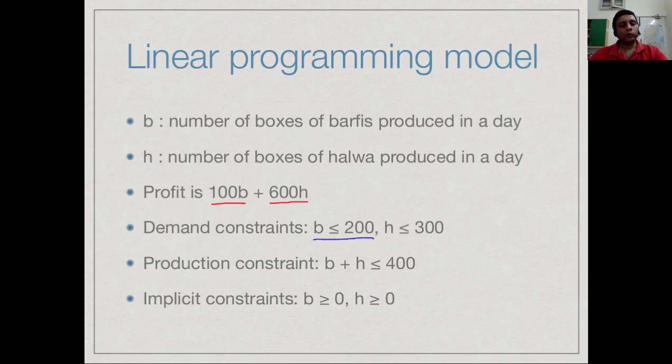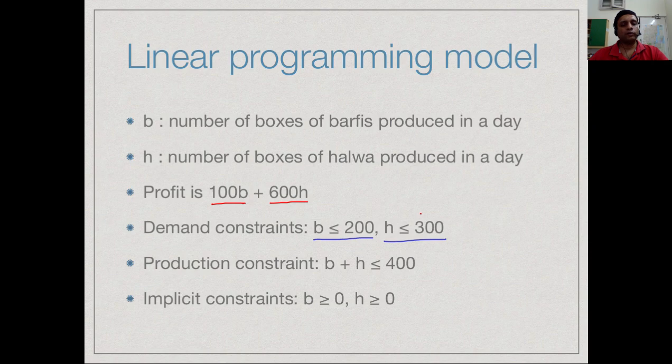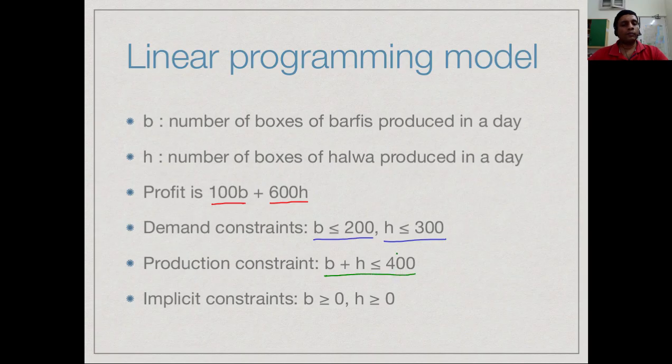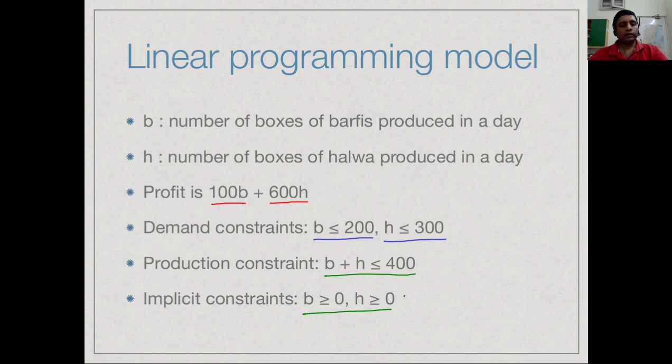We also have some information about how much we can sell. We cannot sell more than 200 boxes of barfis a day, so b must be less than or equal to 200. We cannot sell more than 300 boxes of halwa a day, so h must be less than or equal to 300. Finally we are told that together our staff are only capable of producing 400 boxes altogether, whether barfi or halwa or any combination. Implicitly of course we can only make a non-zero quantity of barfis - we cannot make minus 7 boxes of barfis. So we have these implicit constraints: both b and h must be greater than 0.